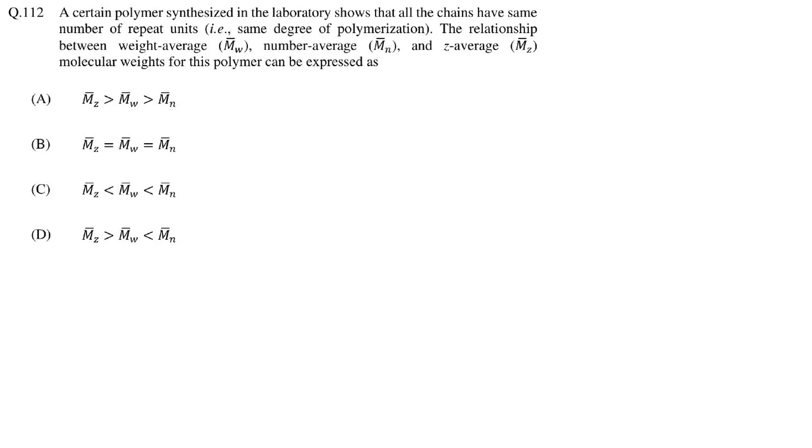In this question we need to find the relationship among the number average, number of repeat units, weight average and z average molecular weight of a polymer having same number of repeat units in each chain. As we know polymer sample almost always consist of chains with different lengths which are represented by m1, m2, m3 and so on. For a polymer sample with equal length or same number of repeat units is also called as monodispersed or ideal polymer and the value for all the chains will be m.